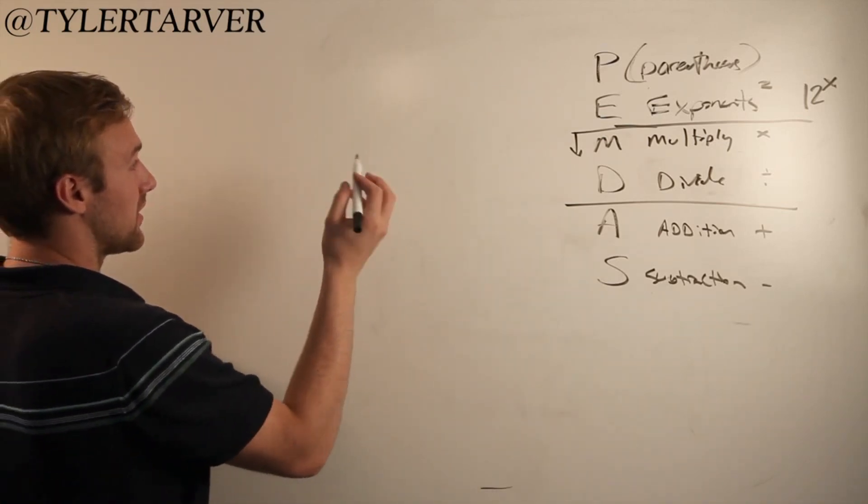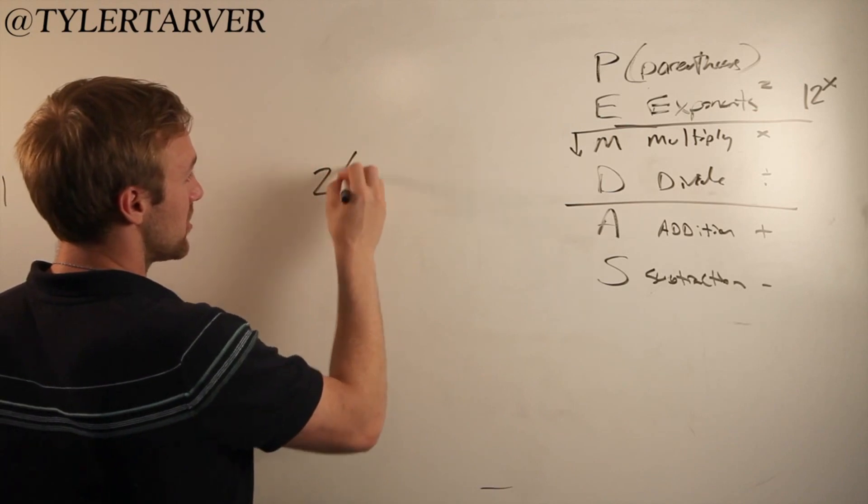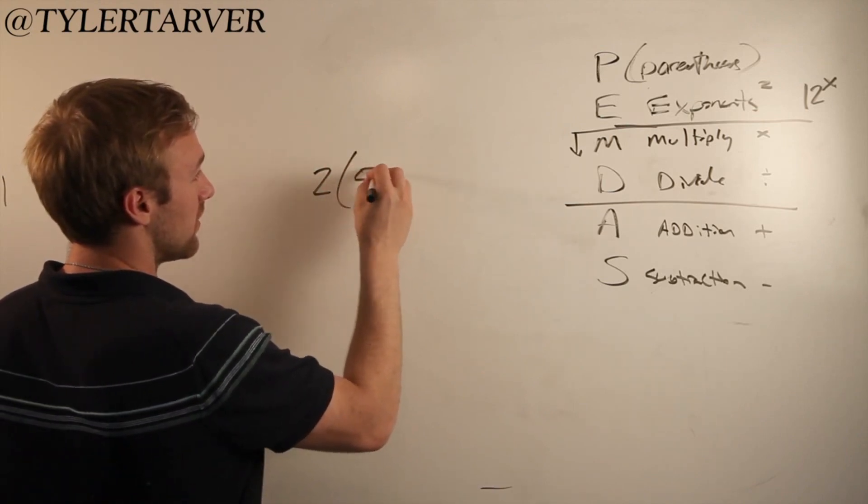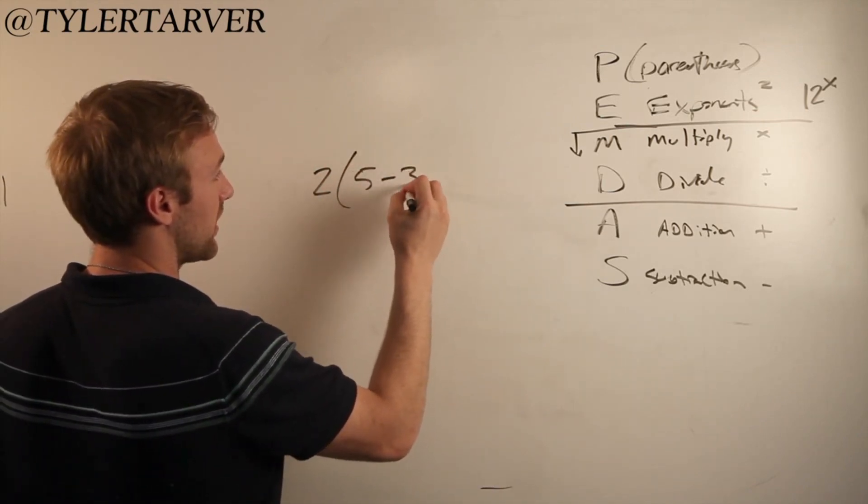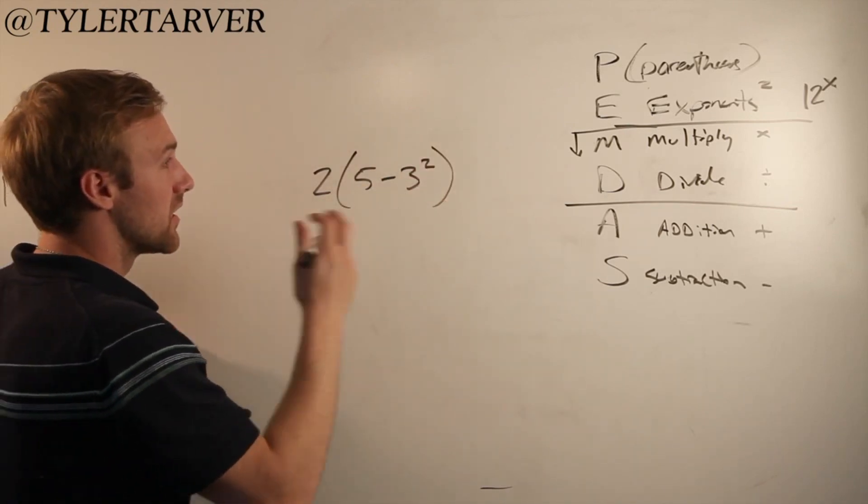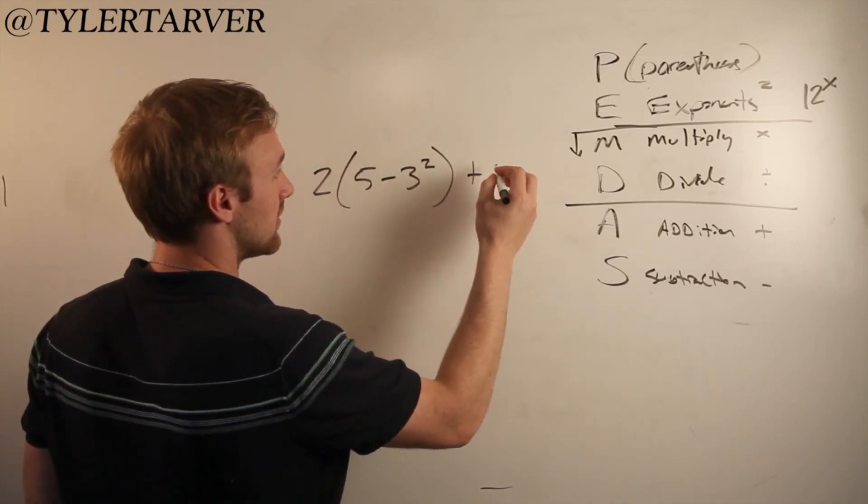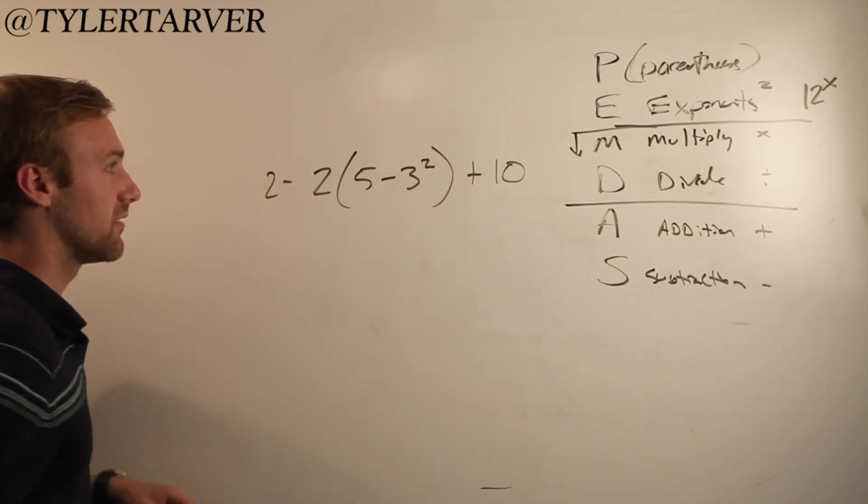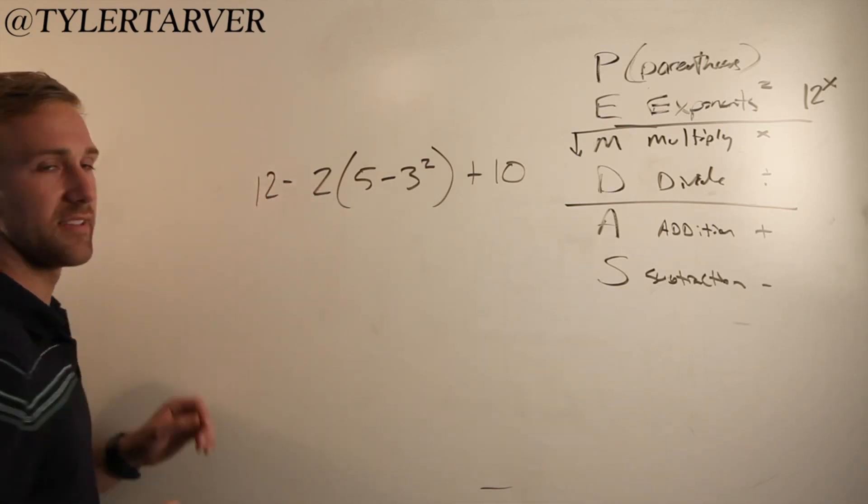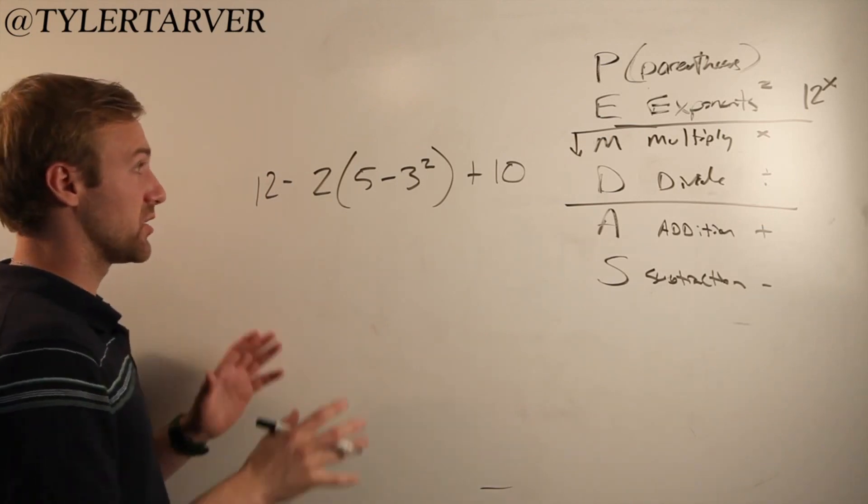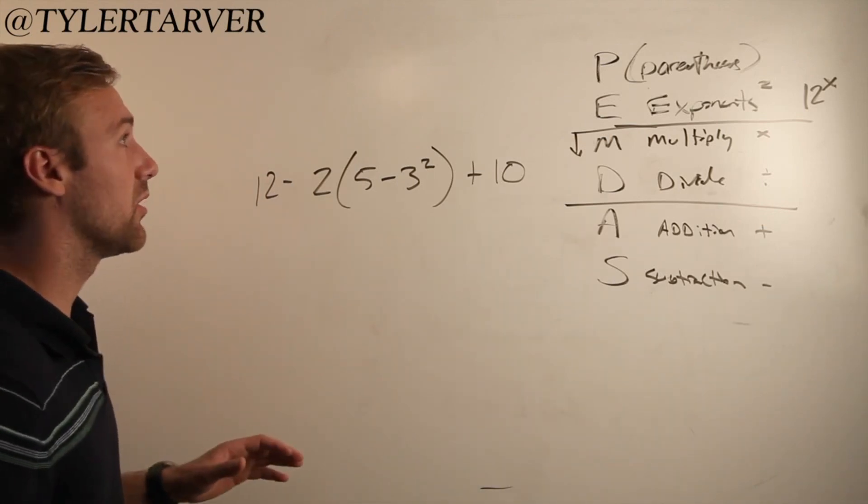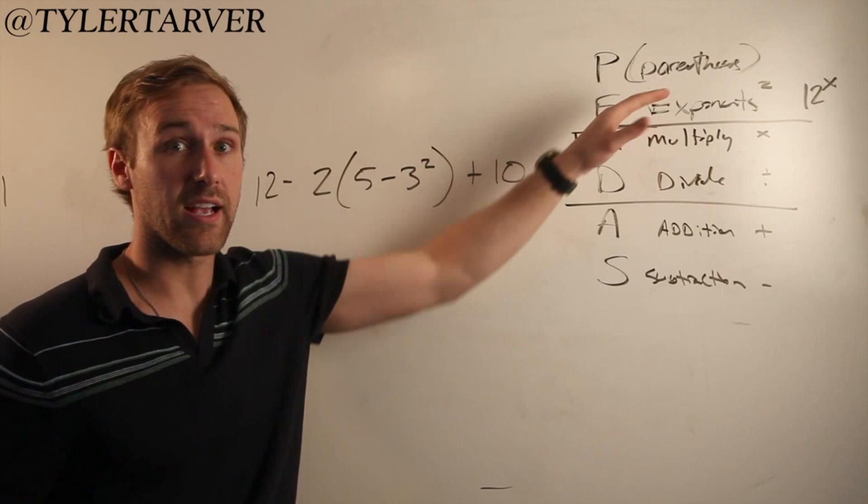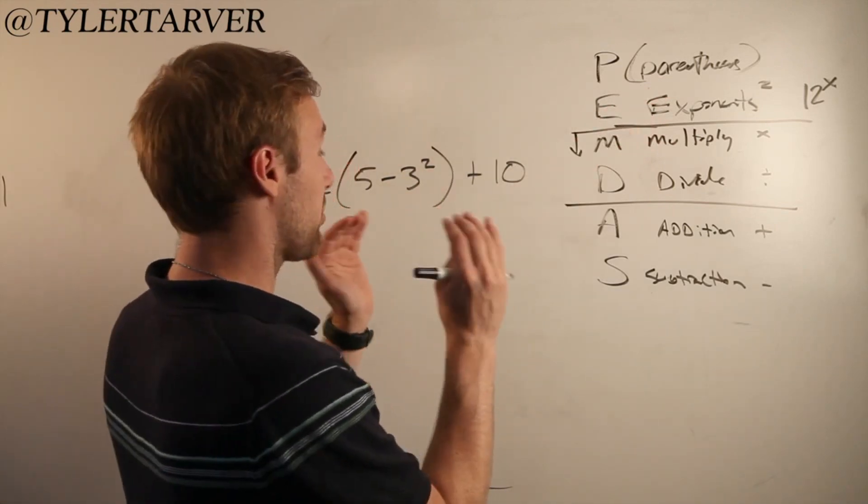2 times 5 minus 3 squared plus 10. And then 12 minus. So we've got this equation right here. All right? First thing I'm going to look for are parentheses. Because my rule is to do what's in the parentheses first.